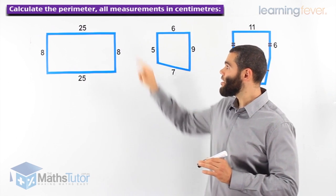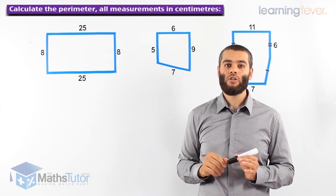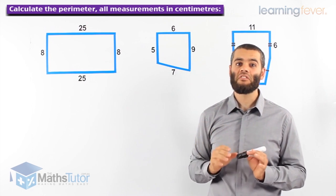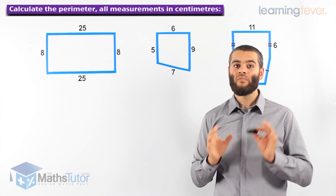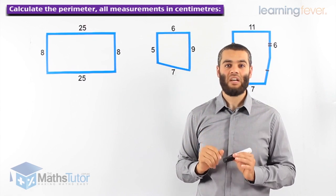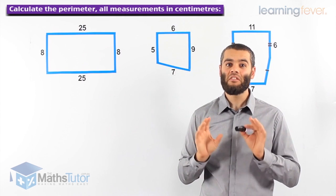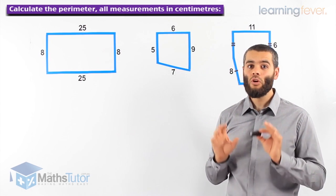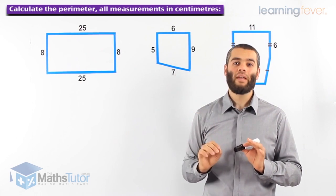The perimeter is simply the outside of the shape. All measurements we're going to write in centimeters, so you've got to be careful in the question — you've got to see: are the units the same? Are they all in meters? Are they all in centimeters? It's very important that the units are all the same. Also, something important: sometimes the diagrams are not to scale. In fact, a lot of the times they're not to scale, so make sure you follow the information given to you, and from that information you can work out the perimeter.